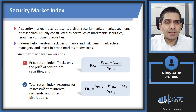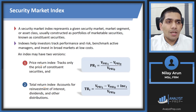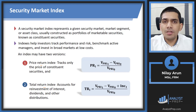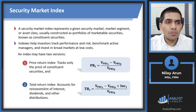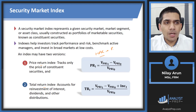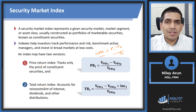Let's have a quick look at the formulas. The price return index formula is quite simple: you take the ending value of the price return index, subtract the beginning value, and divide by the original price level of the index. This is exactly the same as the holding period return formula — P1 minus P0 divided by P0. So price return index is basically holding period return; it's not a new formula.